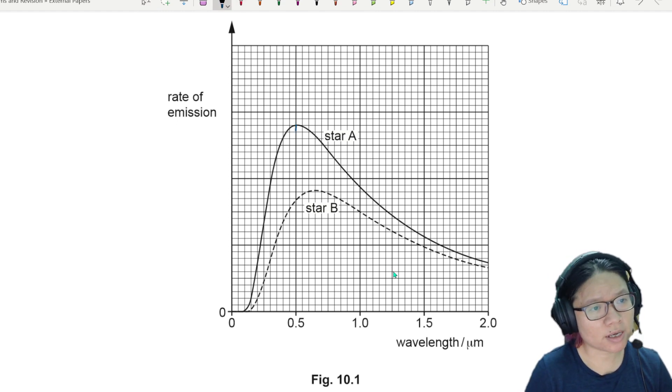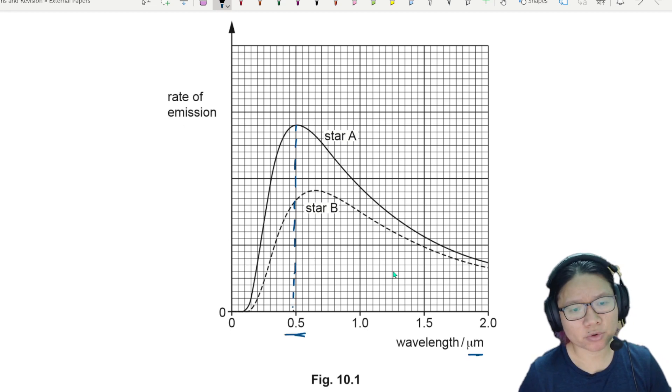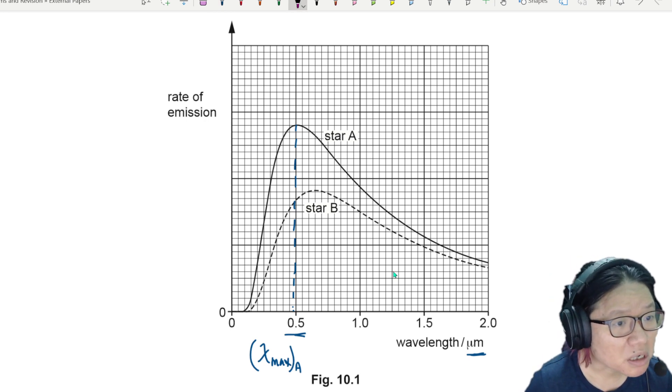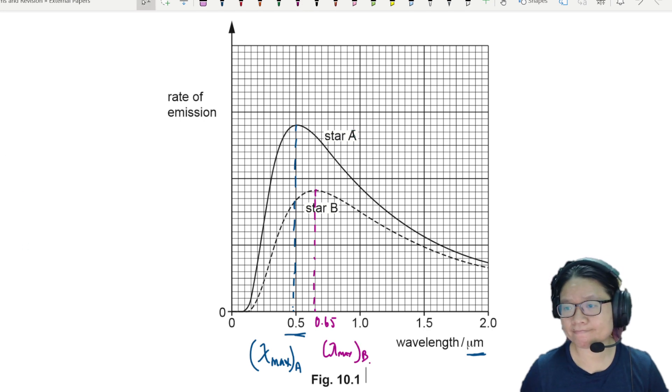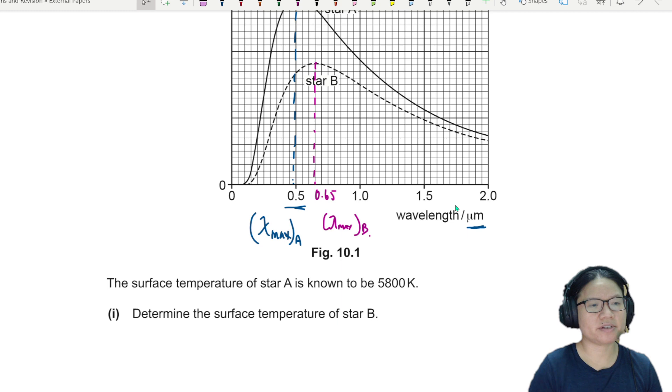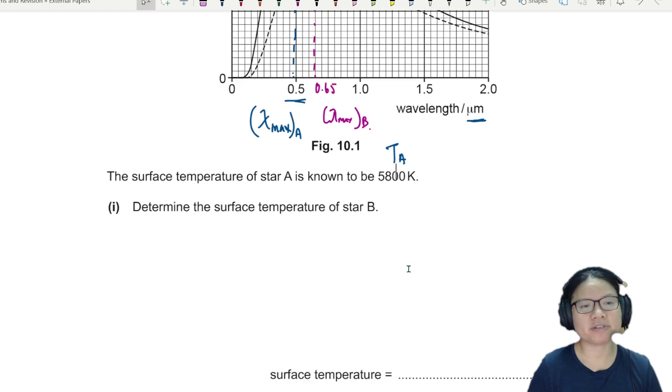So if you read here, star A, I have a lambda max of 0.5 micrometer, lambda max for star A. And if I look at star B, I guess if I want to guesstimate or estimate the maximum lambda will be this one. This one looks like 0.65. So 0.65. This is lambda max for star B. Next. We know that the surface temperature for star A is 5800 Kelvin. Determine the surface temperature of star B.